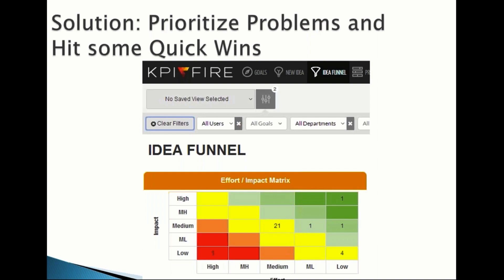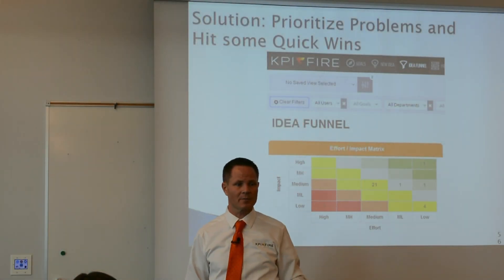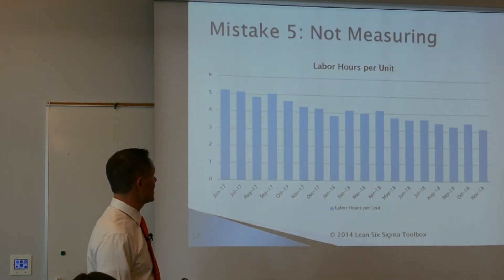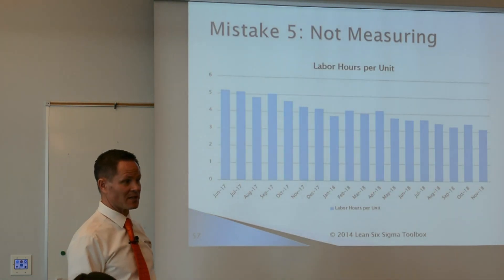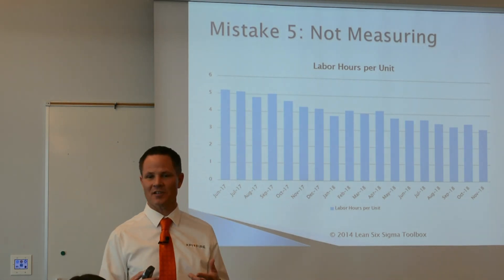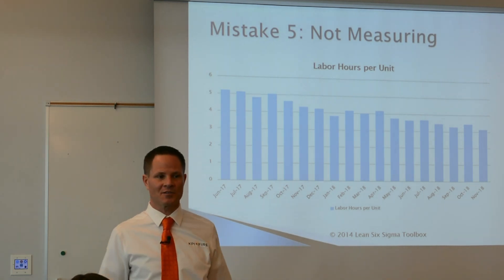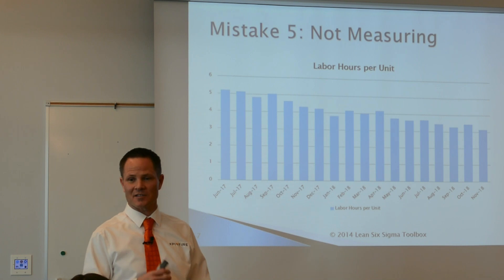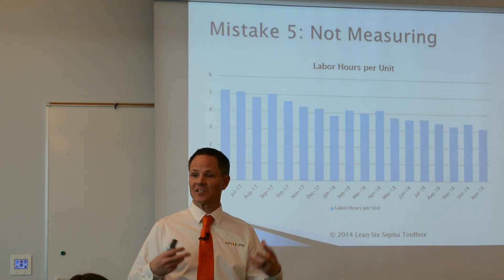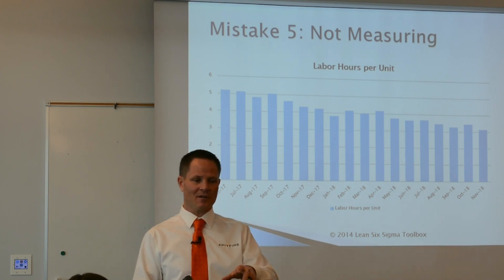The solution: take your ideas and use an effort-impact matrix to prioritize which projects give the highest impact with the lowest effort — then go knock them out. Mistake number four: not measuring. If you don't measure whether you're winning or losing, your team doesn't know if they're successful, which removes motivation. When a team feels success, it snowballs — they breed more success.